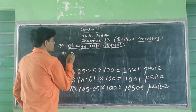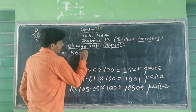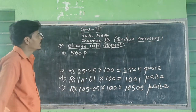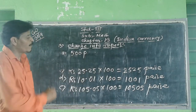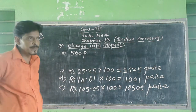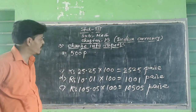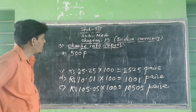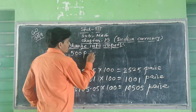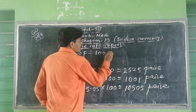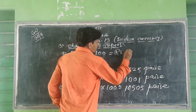Question Number 3a: 500 paise. We know when we change paise into rupees we divide by 100. So, 500 paise divided by 100 equal to Rupees 5.